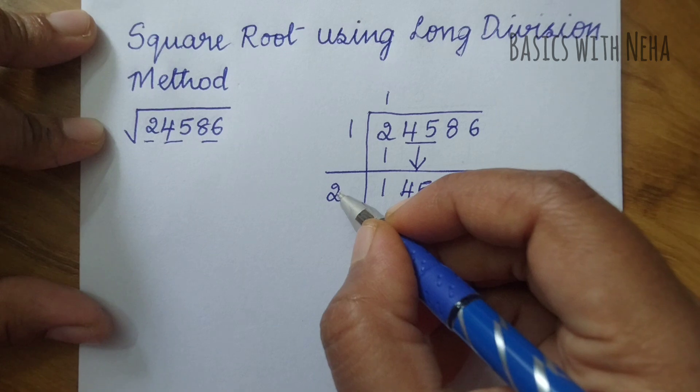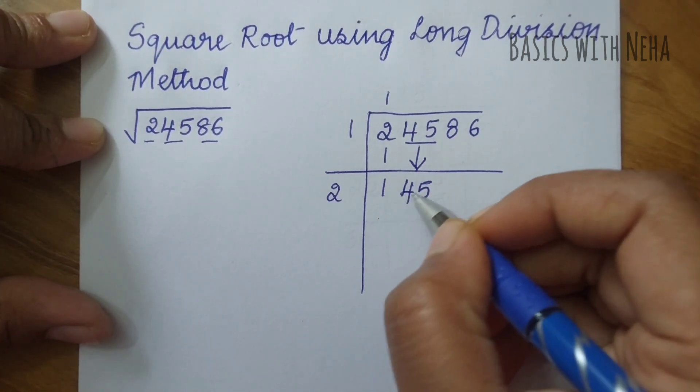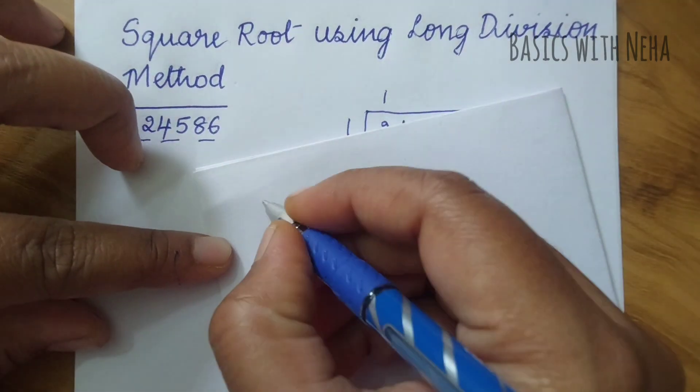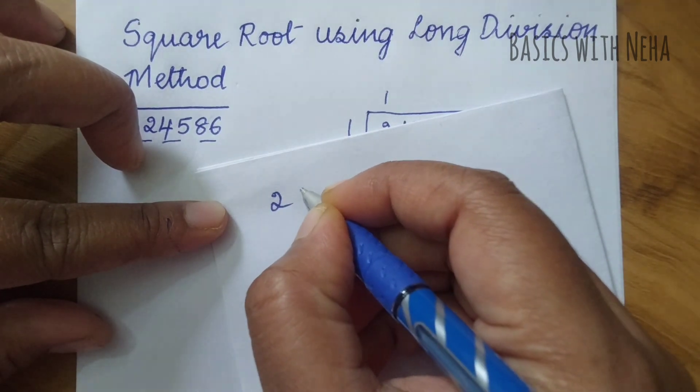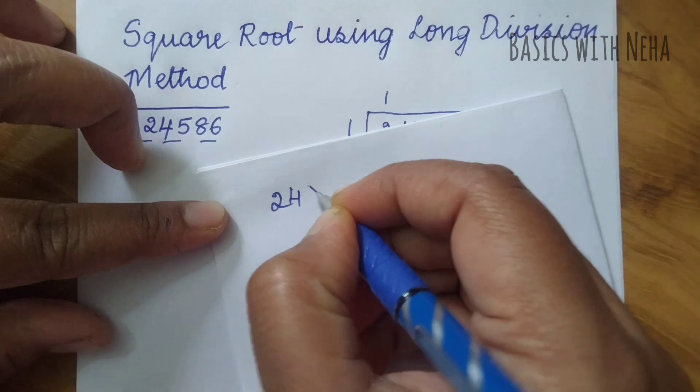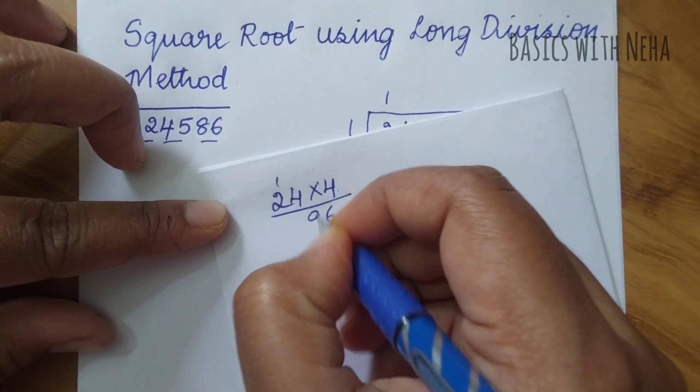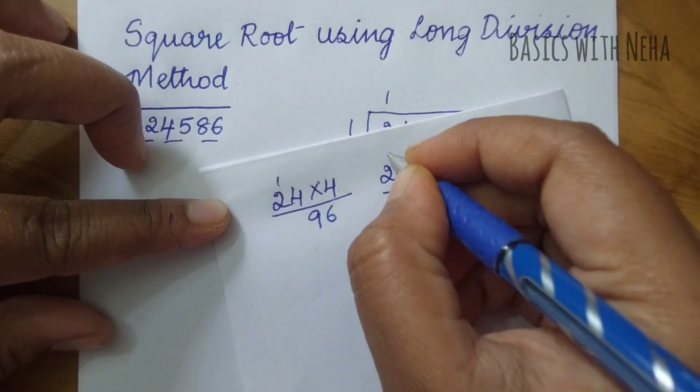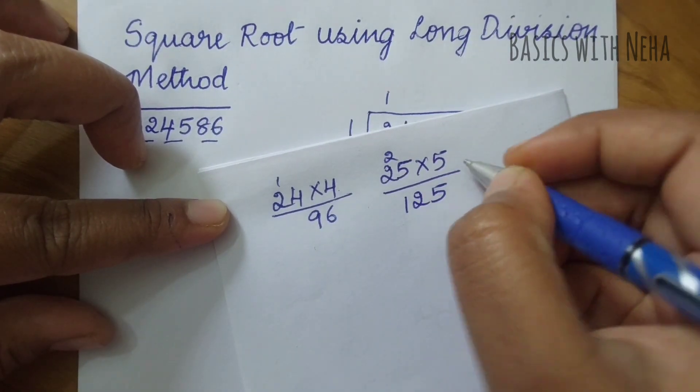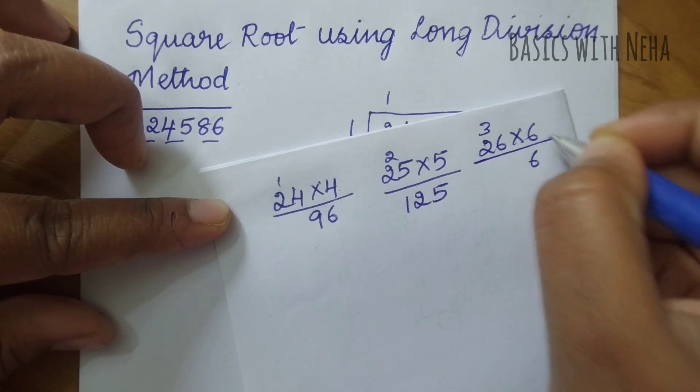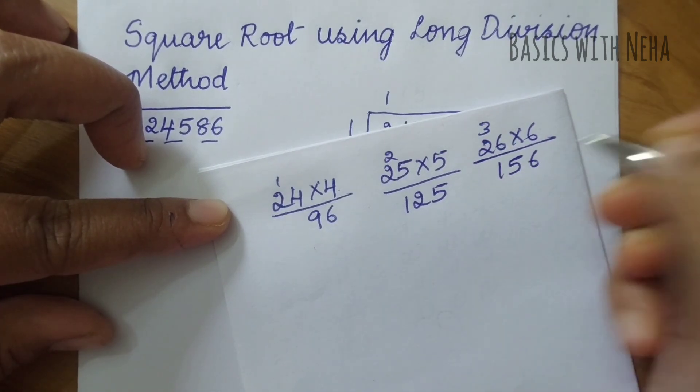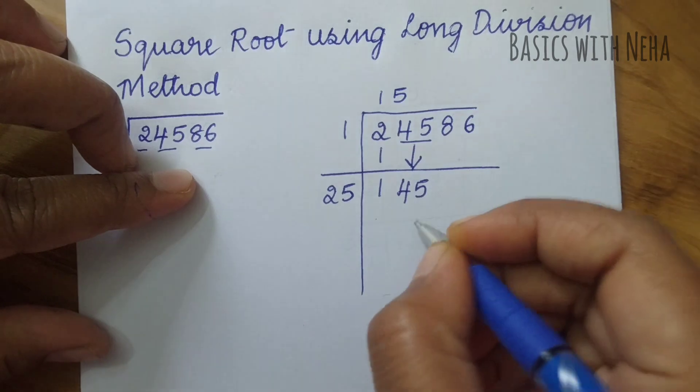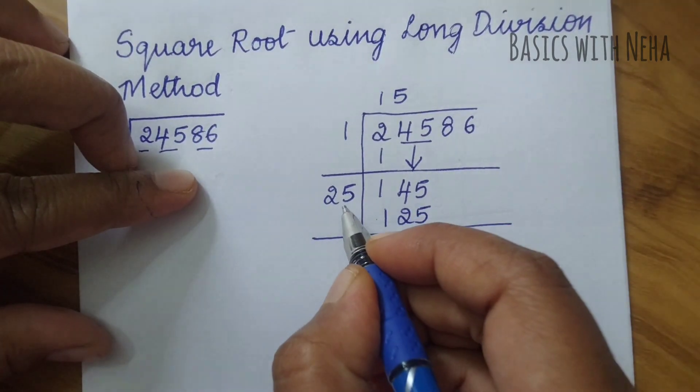I have to take these both together down which will be 145. Here 1 doubled is 2. I'm going to take 2 here and 2 with another number when multiplied with the same number should get 145 or less than 145. Let me take a rough sheet. If I take 24 into 4, that's 96 which is much smaller than 145. Let's try 25 into 5, that's 125. 26 into 6 is 156, which is much larger than 145, so I'm going to take 25.